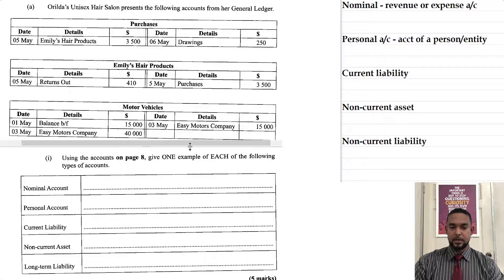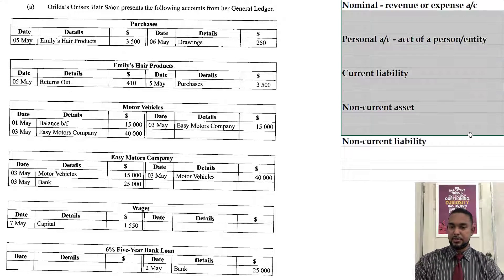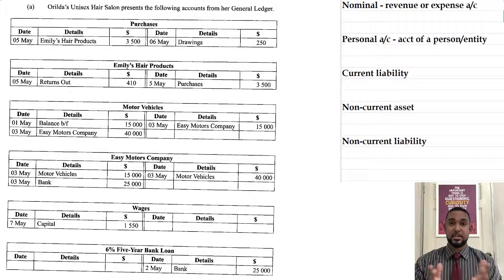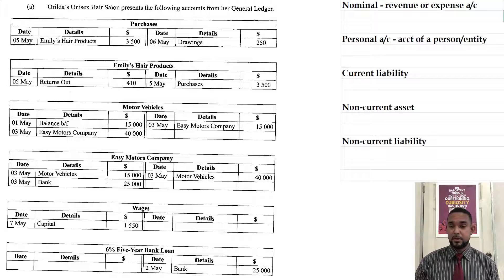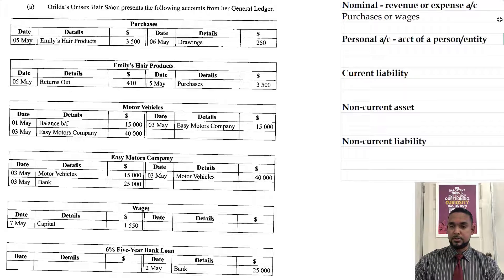So I'm going to kill the split and I have the same information on this side here. A nominal account is an account that houses a revenue or an expense account — it's a temporary account. Most if not all nominal accounts are closed off to the income statement at the end of a period; they have no balance at the end of the period. So the nominal accounts I'm seeing here are purchases and wages, because they are both expense accounts. So the answer is purchases or wages.